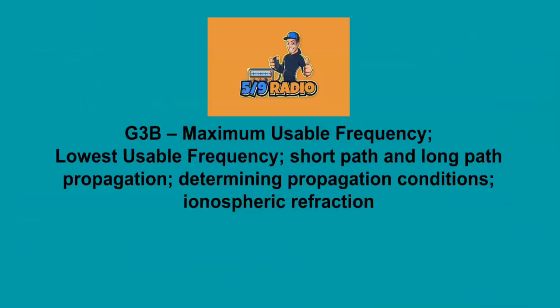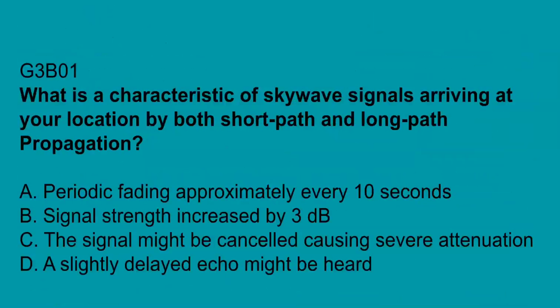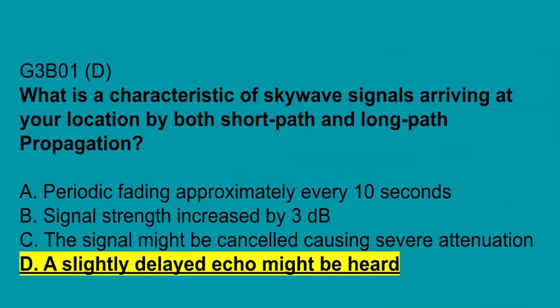G3B covers maximum usable frequency, lowest usable frequency, short-path and long-path propagation, determining propagation conditions, and ionospheric refraction. G3B01: what is the characteristic of sky-wave signals arriving at your location by both short-path and long-path propagation? A slightly delayed echo might be heard.